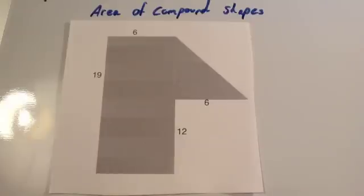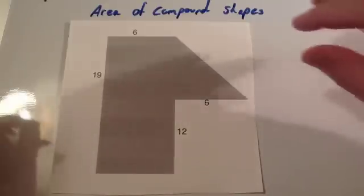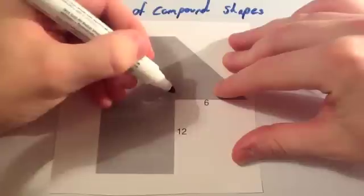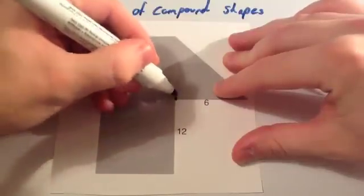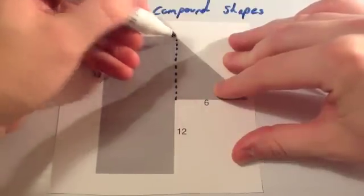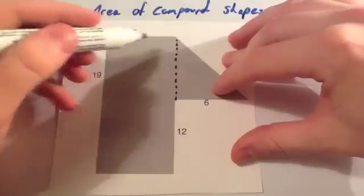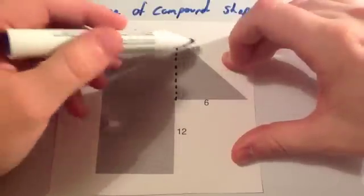We're going to look at how to find the area of compound shapes. The easiest way to find the area of a compound shape is to split it into two parts. So if I had this, I'd probably want to split this into that. That means that you've got the rectangle and you've got the triangle.